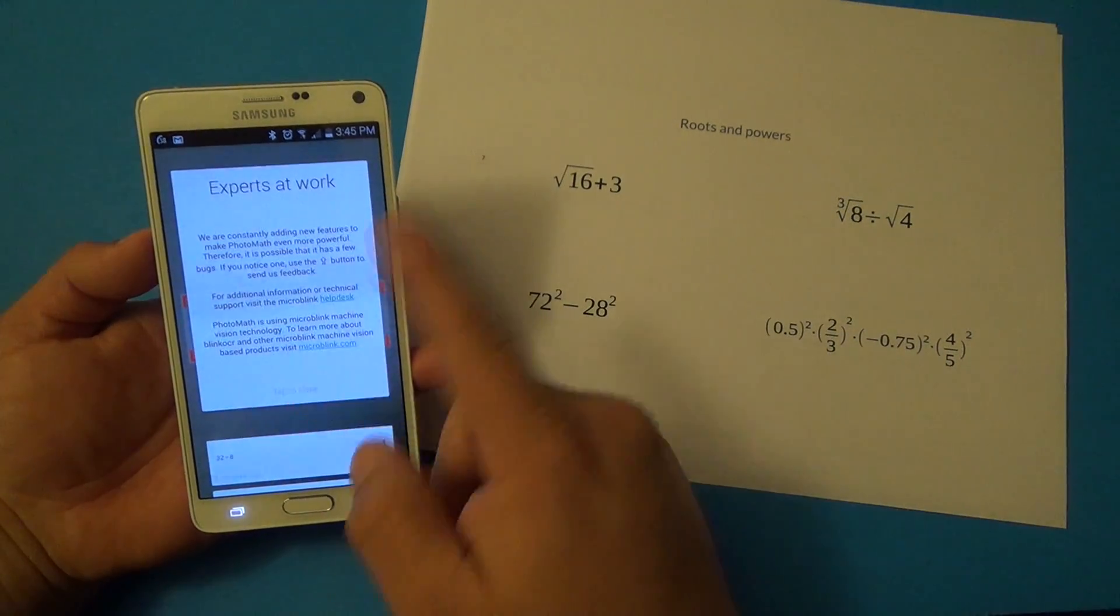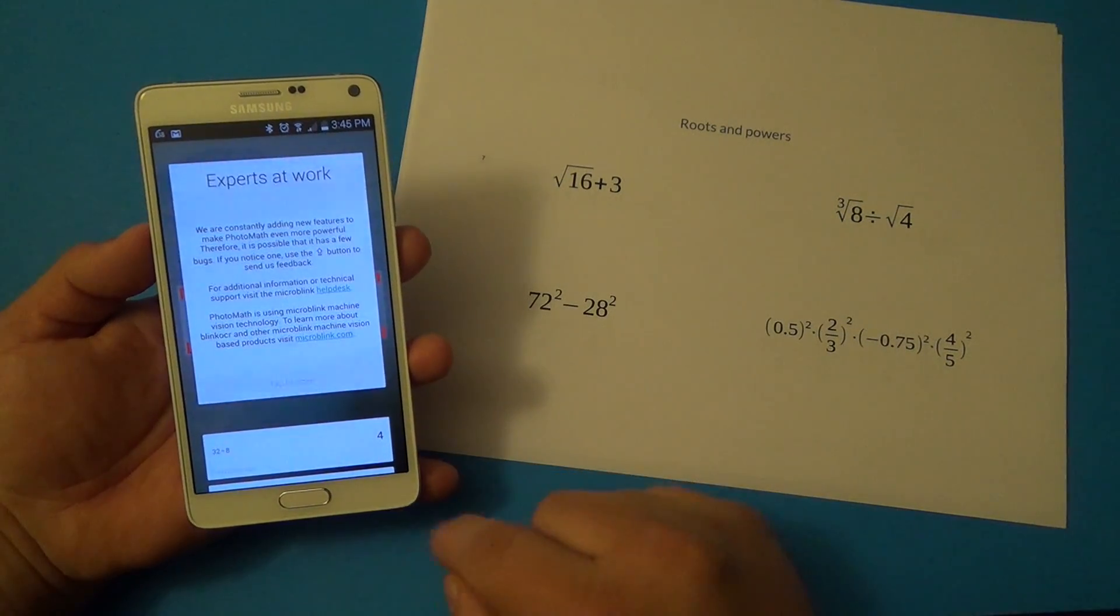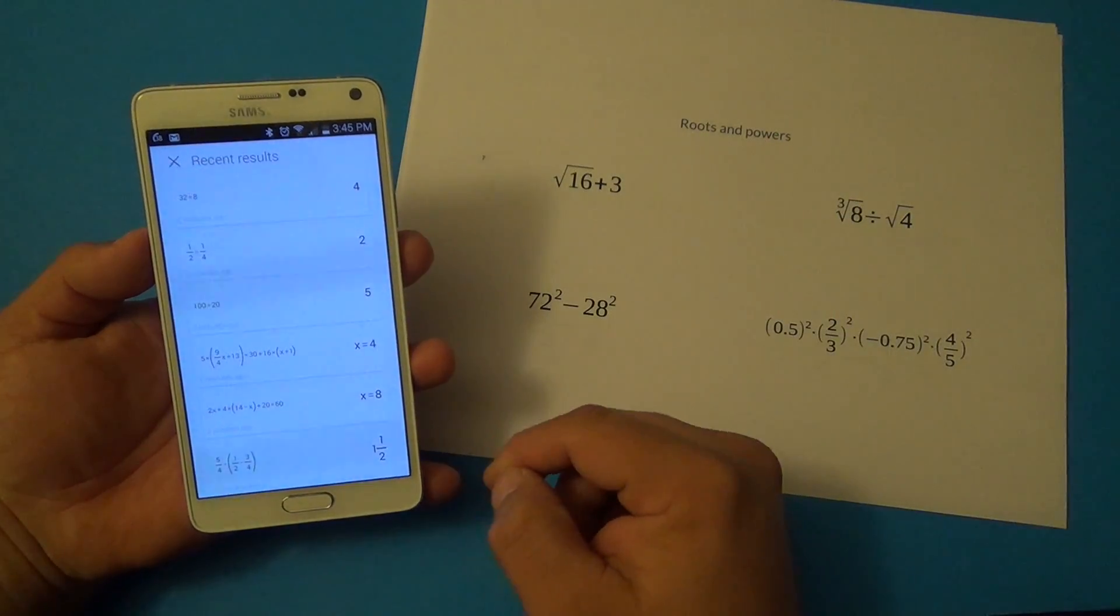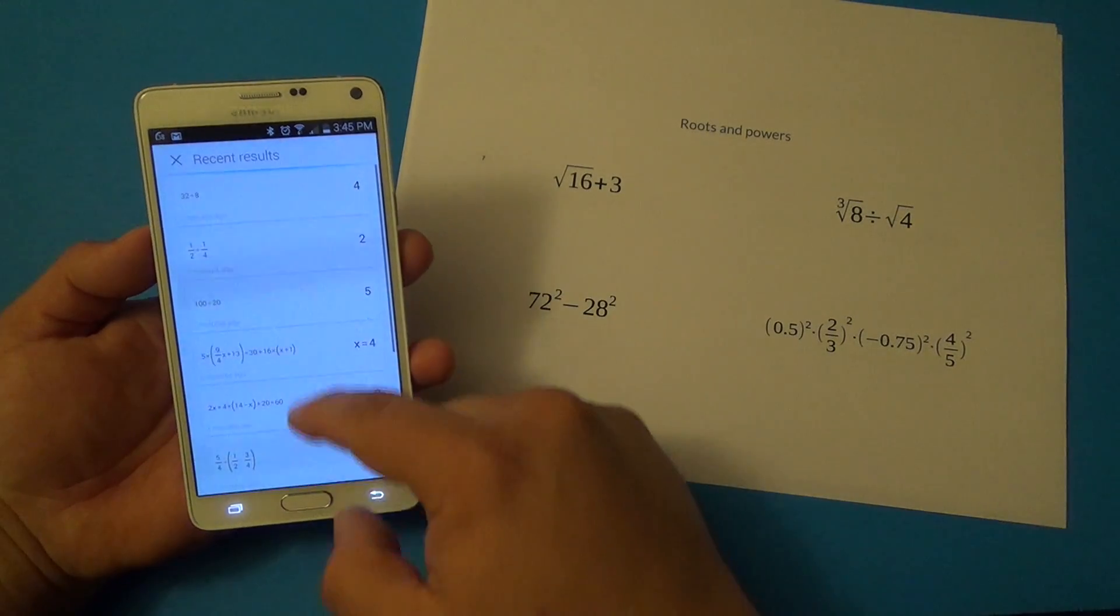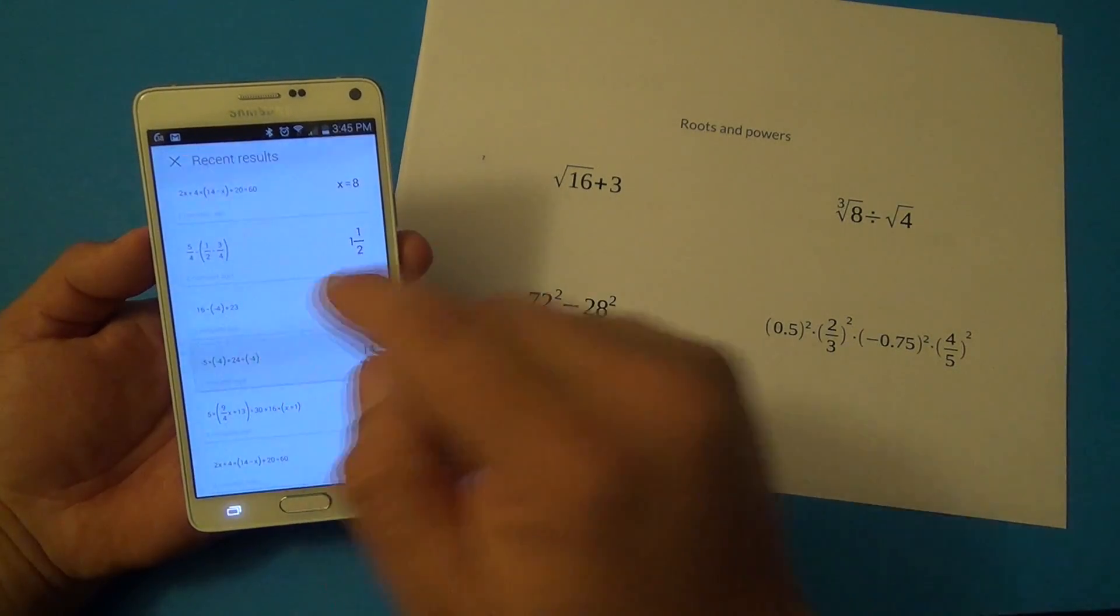Right here you've got some information about the app. Over here, you swipe up and you can see all your recent results. What's very cool about this app is when you scan a problem and it solves it, you can see all your recent results.